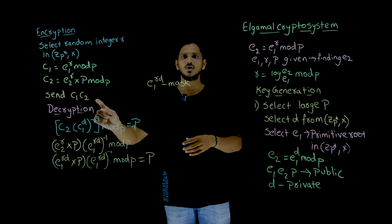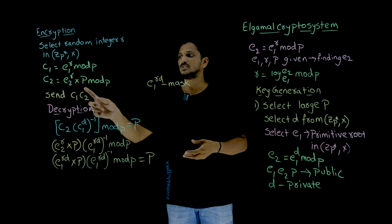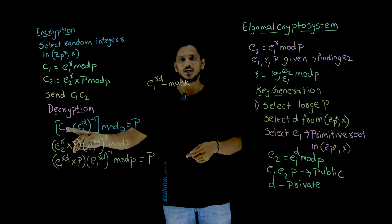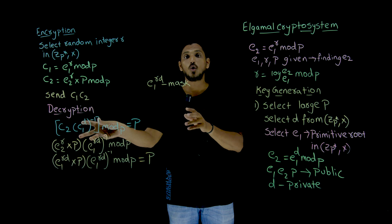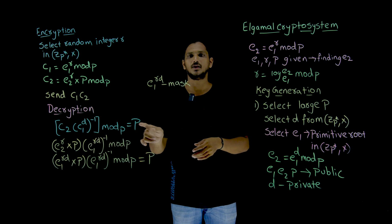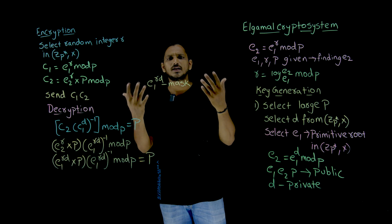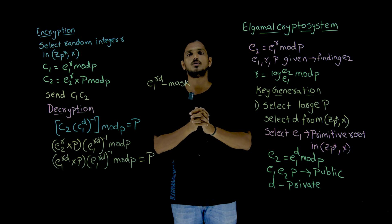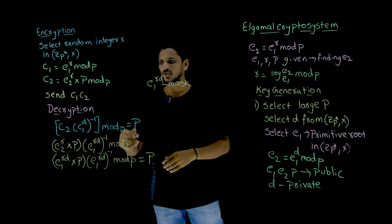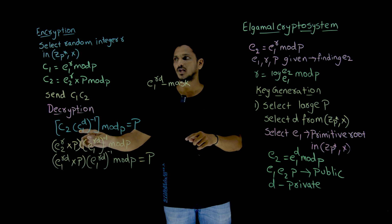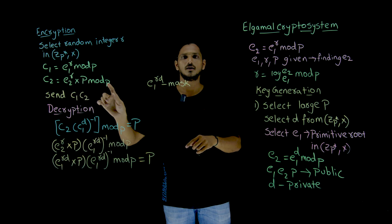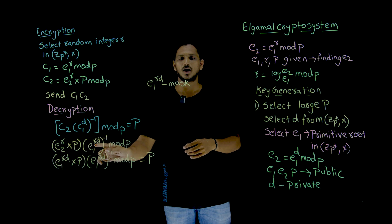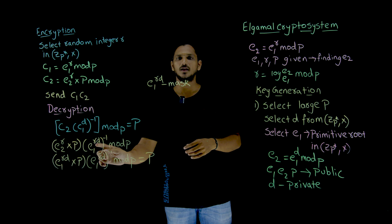Once the receiver gets c1 and c2, he performs decryption to recover plaintext P. He computes: P equals c2 multiplied by (c1 power d) inverse, mod p. To understand why this works: inside c1 the sender kept e1 power r, so c1 power d equals e1 power r·d. The receiver has d, so he can compute (e1 power r·d) inverse.